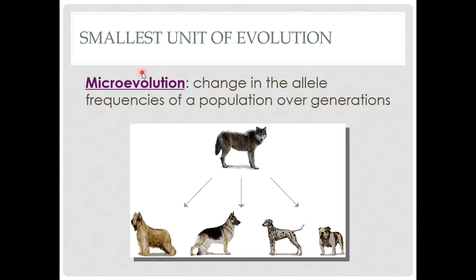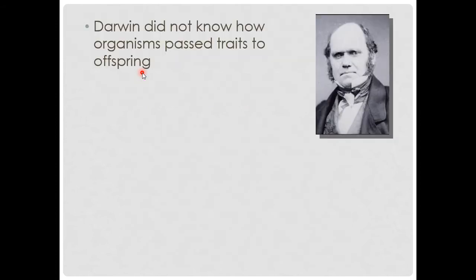As we move forward, start using the terminology of microevolution as opposed to macroevolution. Microevolution is changes in the allele frequencies of a population over generations — all the little changes within a population over time, maybe due to random chance or some environmental effect. We're not forming new species here, just little changes. If we accumulate enough microevolution, it may lead to larger-scale changes such as a new species, but we're not at that point yet.